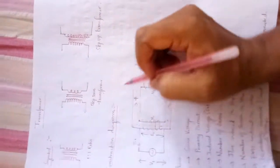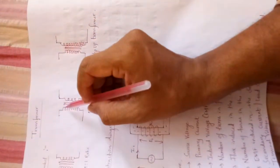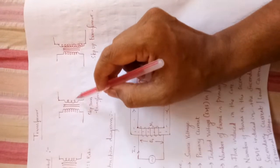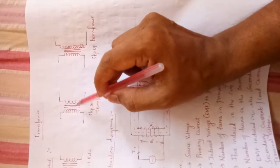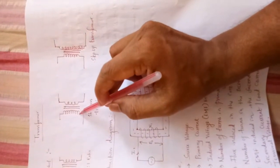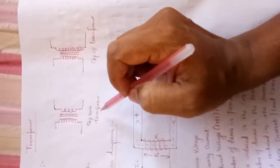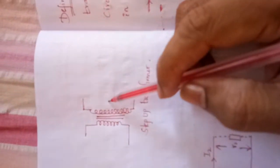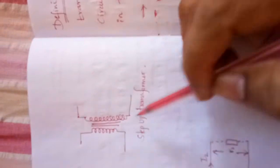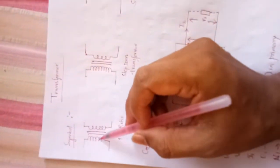In the second representation, the number of windings in the primary side is more than the secondary winding, hence the voltage induced in the secondary winding will be lesser than the primary winding — this is called a step-down transformer. In the third one, the number of windings in the secondary side is more than the primary winding, hence it is called a step-up transformer.